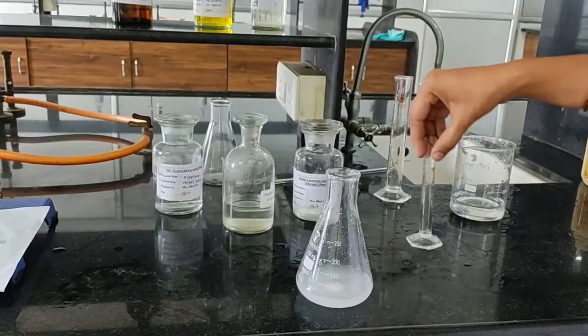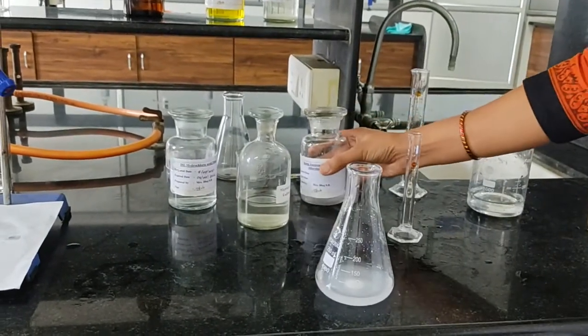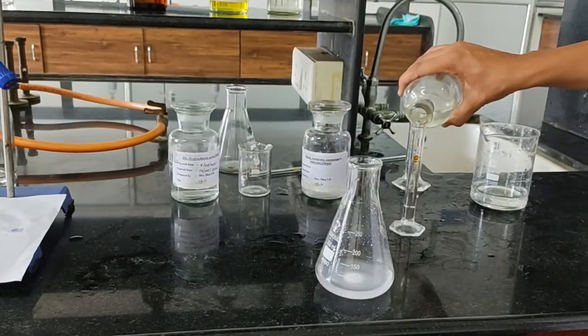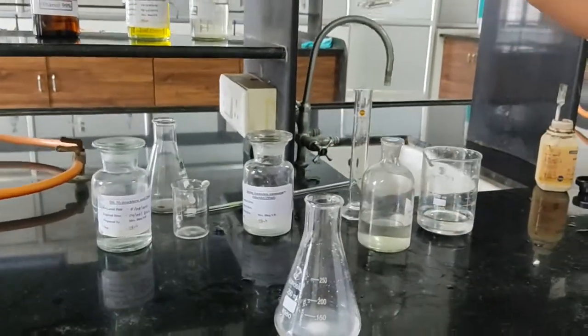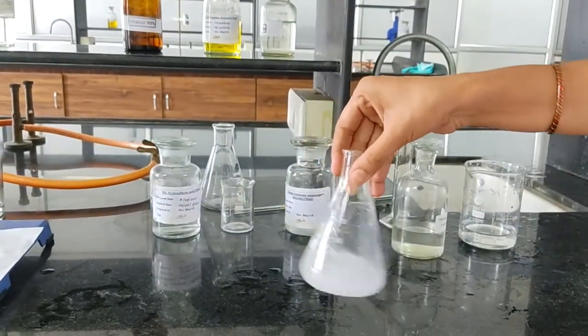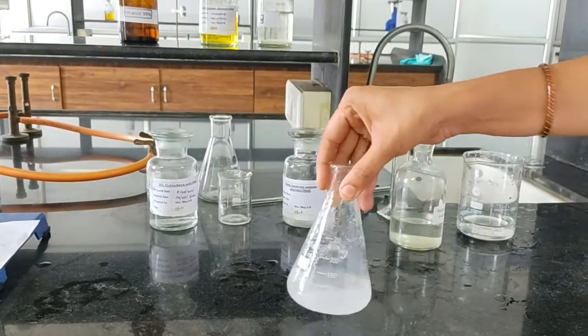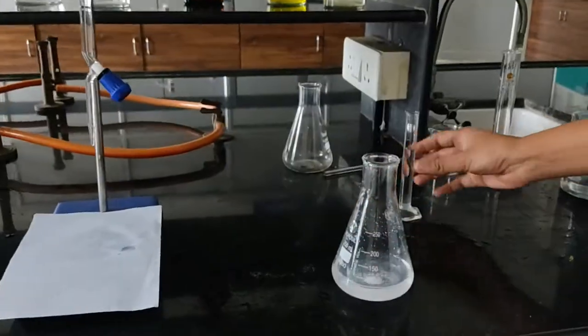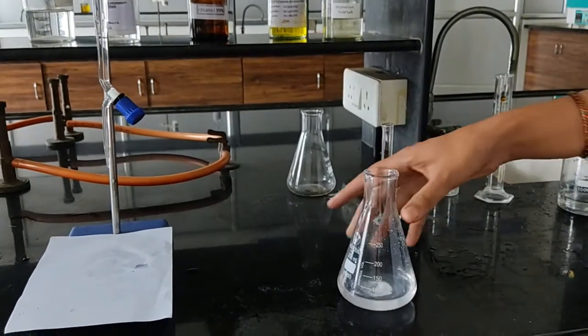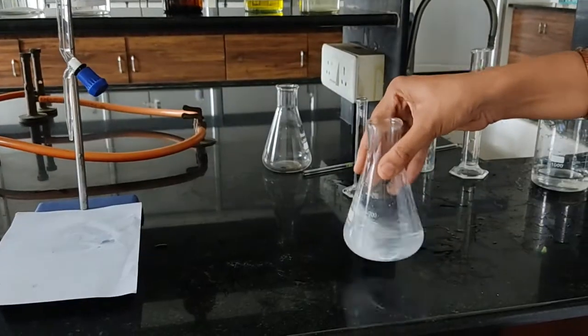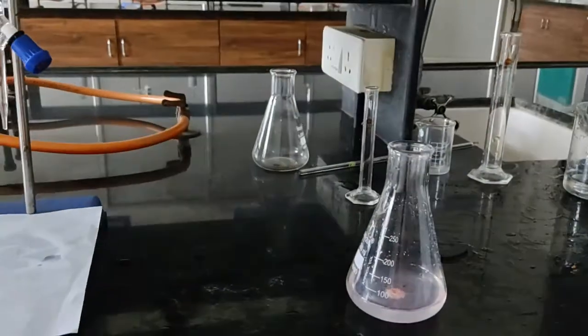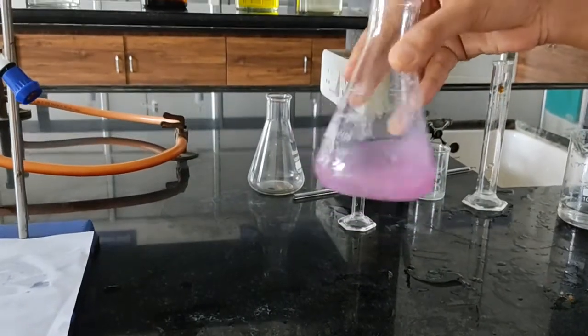Now add 50 ml of distilled water into the conical flask and dissolve calcium gluconate into water. Now add 5 ml of 0.05 molar magnesium sulfate into the conical flask. Again mix it properly and add 10 ml of strong ammonia solution. Add 10 ml of strong ammonia solution into this solution. Again shake it properly and finally add 0.1 gram of Mordant Black Second as indicator. We got pink colored solution.